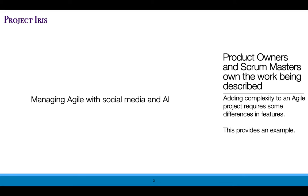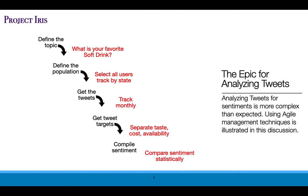Managing social media and AI adds complexity to the typical Agile project, and in this session we will describe some of those differences. Starting with a business purpose for this application, we want to determine what is the favorite soft drink from users in every state. We want to track their favorite soft drinks monthly and then understand separately whether they like the taste, whether it's their favorite because of the cost, or if they're influenced by the availability of the drink. We'll take that as input and compare them statistically to understand why people like those soft drinks.